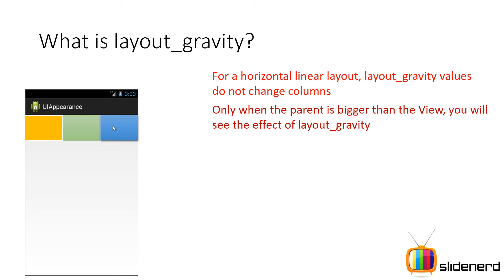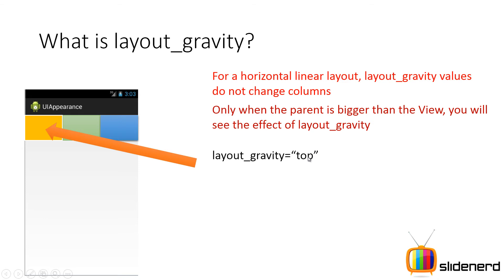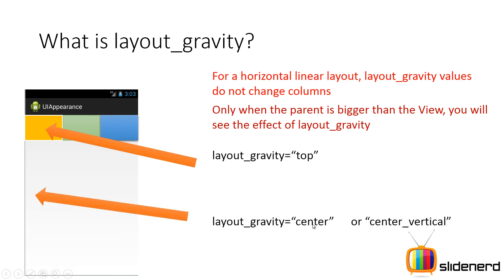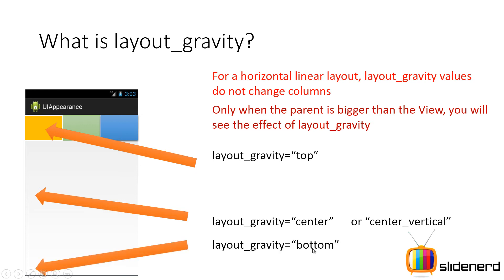For example, if your linear layout is wrap content in width and height and you have a button inside it which is also wrap content, you're not going to see any effect of layout gravity. When the first UI control has layout gravity equals top, it places it in the default location. When layout gravity equals center or center vertical, your box will be somewhere near the center. And layout gravity equals bottom puts your box at the bottom. Anything other than this — like center horizontal — is not going to have any effect on a horizontal linear layout.